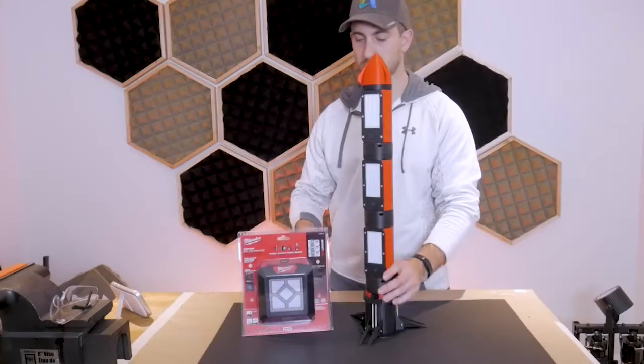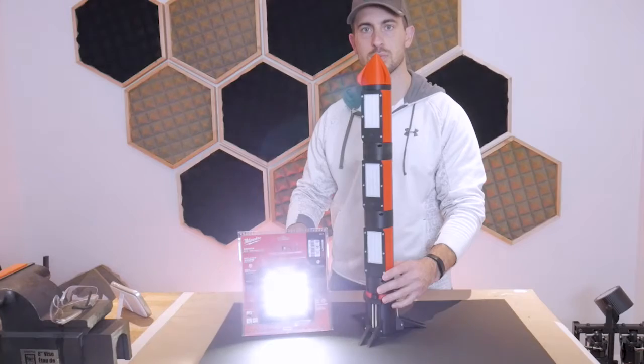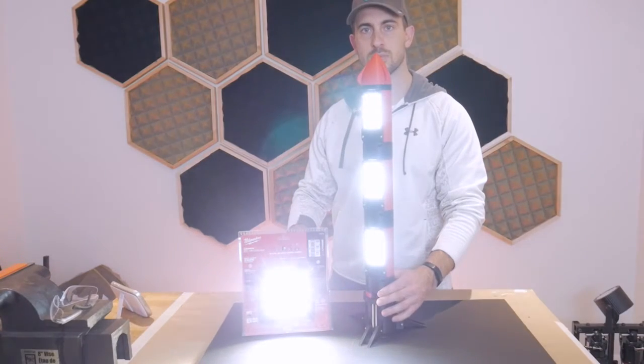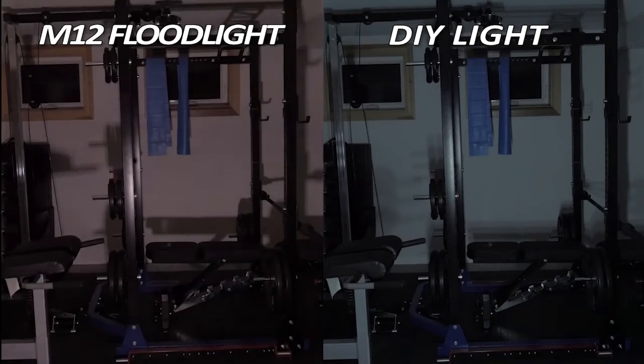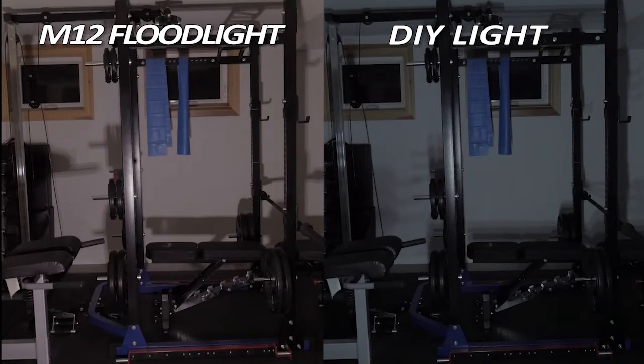Now we can get into a quick comparison with the Milwaukee M12 floodlight. We'll start with overall brightness, and I've brought both lights into my basement. When I turn them on, you can see I've split the screen to show the two lights simultaneously. In person, the Milwaukee light appears to be a warmer tone whereas my light appears to be cooler. On camera there isn't too much of a difference—it might be the white balance of my camera affecting that. Overall, I do think the Milwaukee light is slightly brighter, so I will give it the edge in that department.